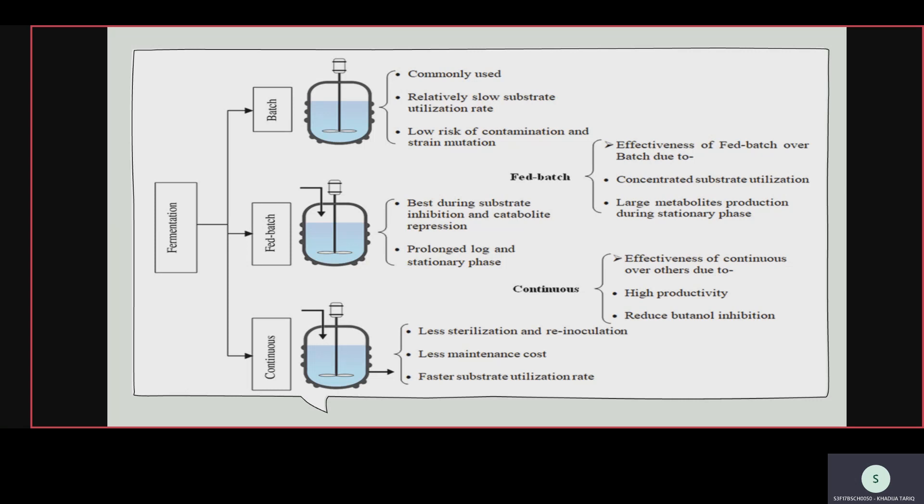In fed-batch process it is best during substrate inhibition and catabolite repression. It has a prolonged log and stationary phase — meaning cell division is prolonged, and after log phase comes stationary phase where cell division stops, also prolonged. Continuous has less sterilization, less re-inoculation, less maintenance cost, and faster substrate utilization rate.